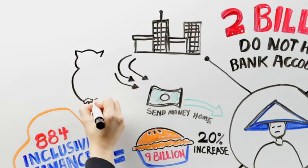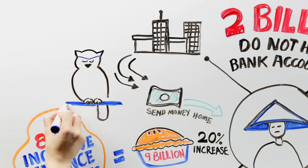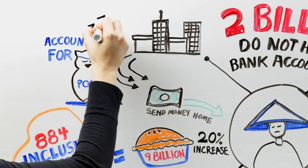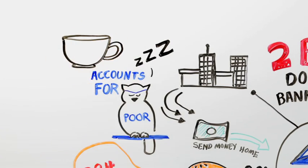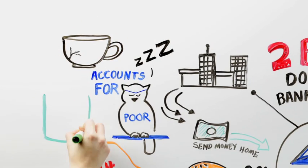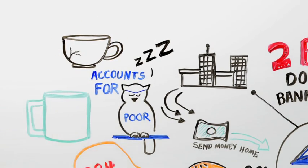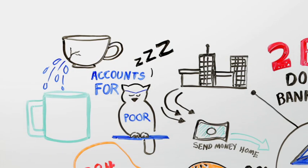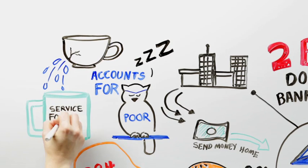In recent years, many accounts opened for the poor in mass rollout campaigns are not actively used. Therefore, instead of focusing on headline numbers and impressive statistics, the relevant goal for the World Bank Group should be providing services to everyone who has a productive or beneficial use for them.